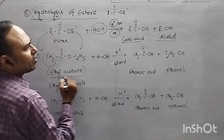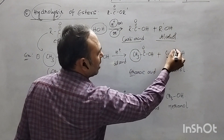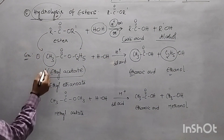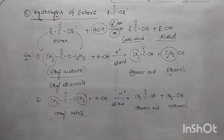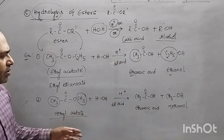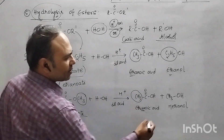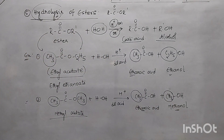From ethyl acetate hydrolysis: RCOOH gives ethanoic acid and R'OH gives ethanol. Second example: R is methyl and R' is also methyl — methyl acetate. In the presence of dilute acid or NaOH, you get ethanoic acid and methanol. With this we have completed the five methods of preparation of alcohols. Thank you so much.